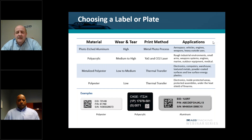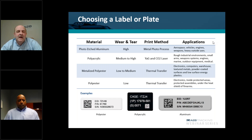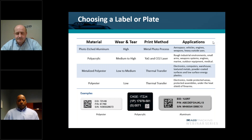Both of these labels use the same thermal transfer print method. What you don't want to do is use these materials and print methods for outdoor assets. This type of print method is subject to fading when exposed to UV rays from the sun. Eventually there will be enough fading that the unique identifier — the 2D data matrix barcode shown in the label examples — will no longer be readable. The label has to last for the life of the asset and remain readable for the life of the asset, so the print method is very, very important.